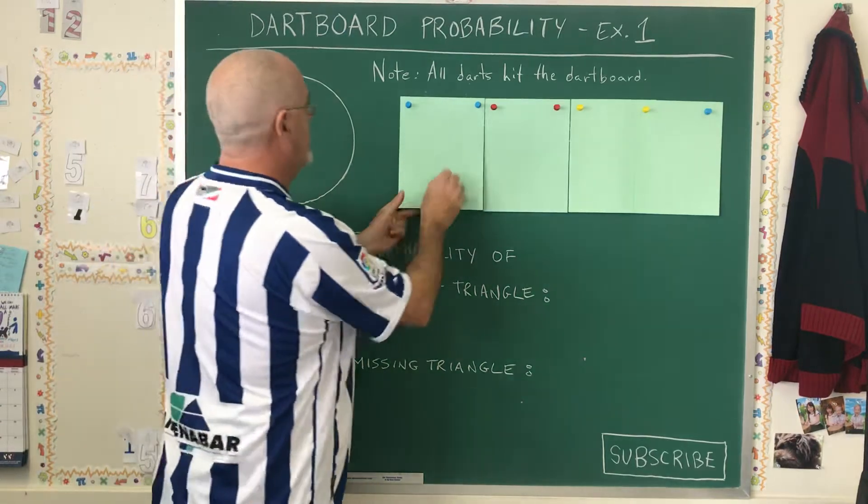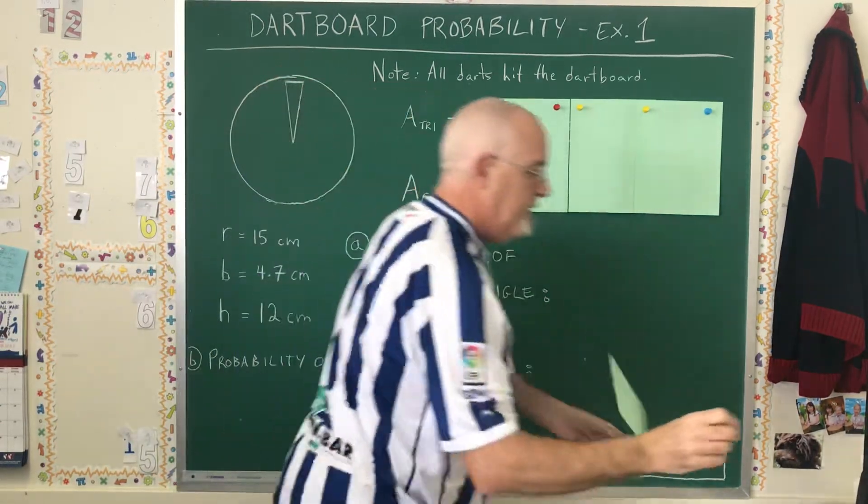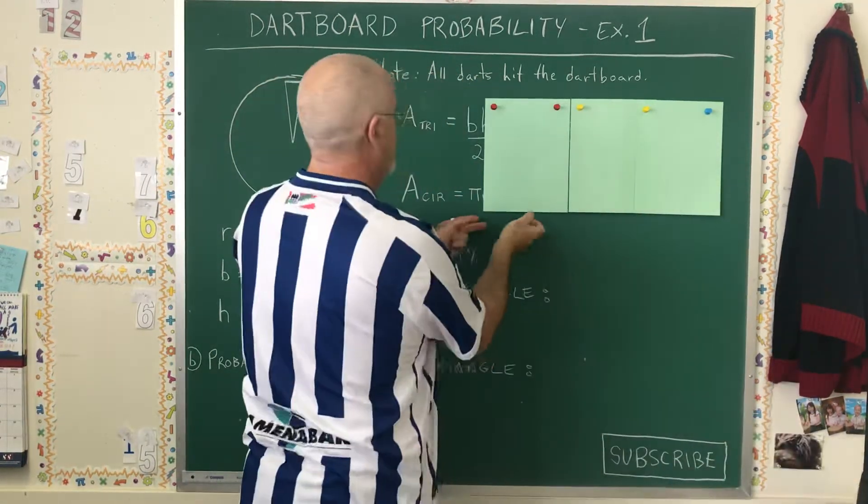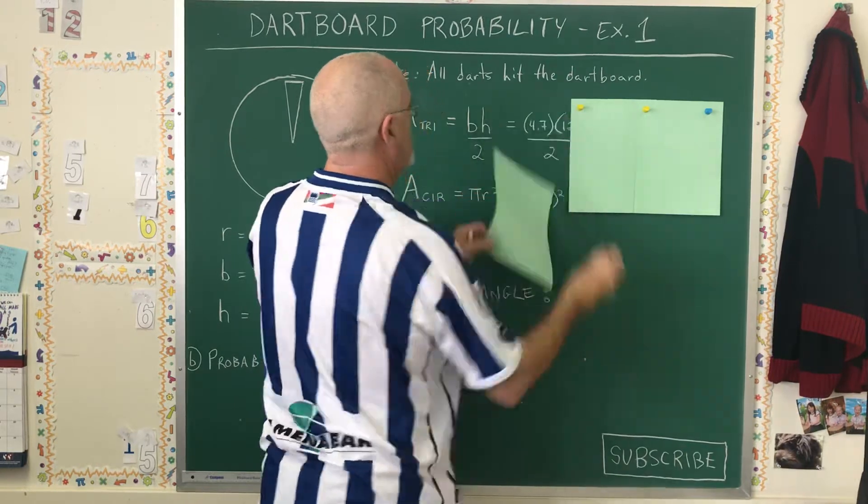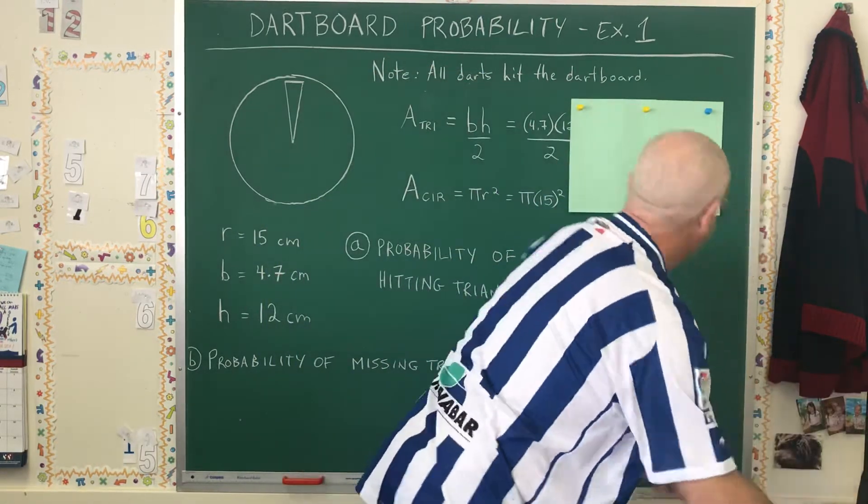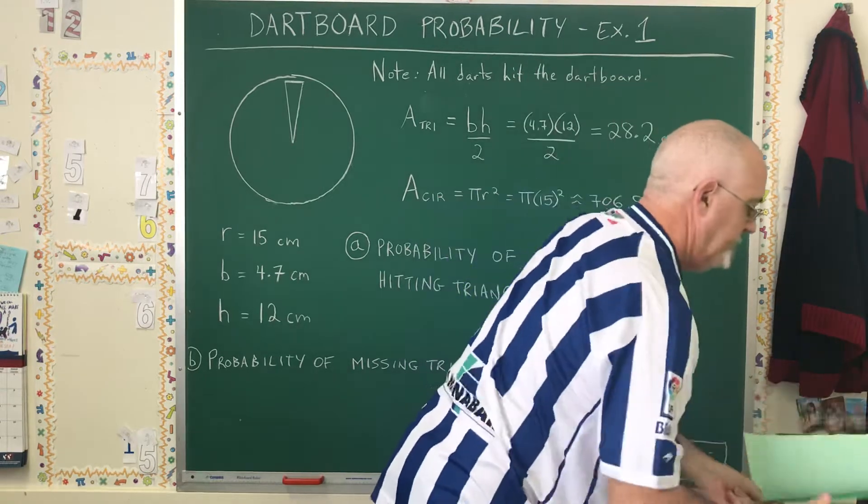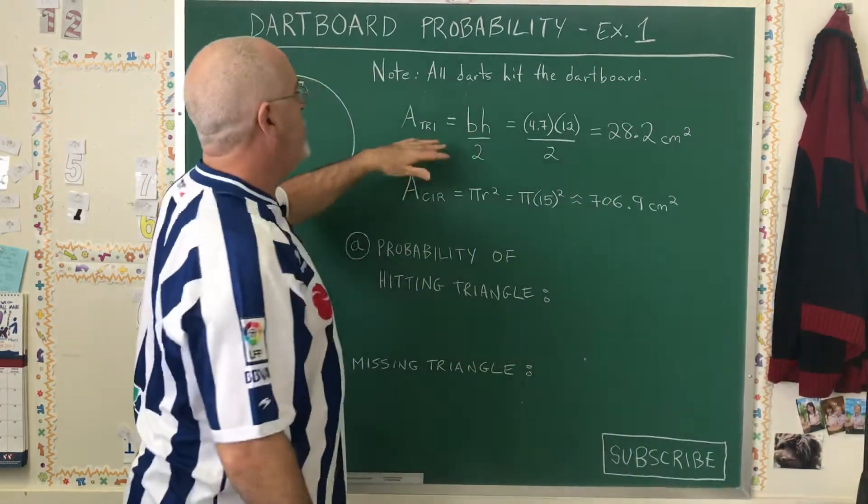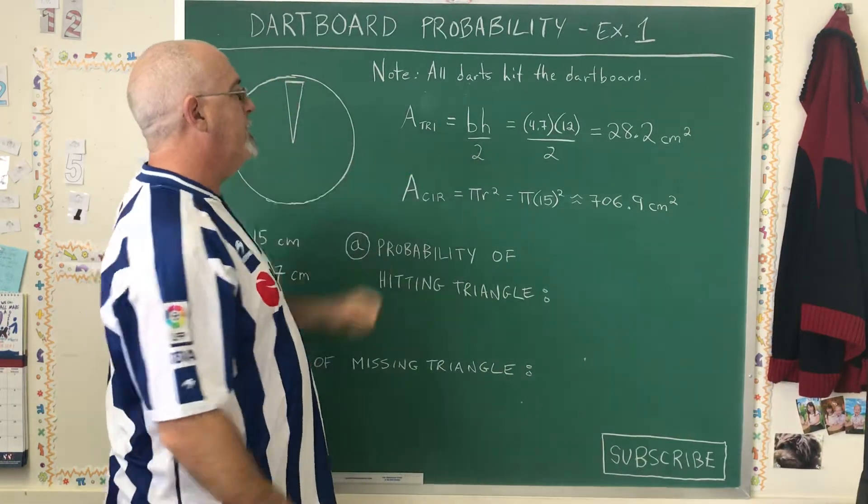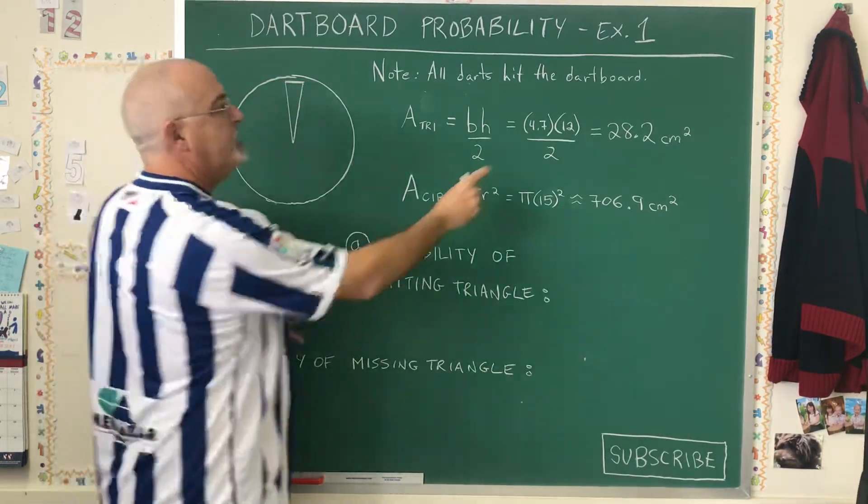So I've done the calculations ahead of time, and I'll reveal them. What we have here is the area of the triangle: base times height over 2. I've plugged in my base and my height, and I've got an answer of 28.2 centimeters squared.